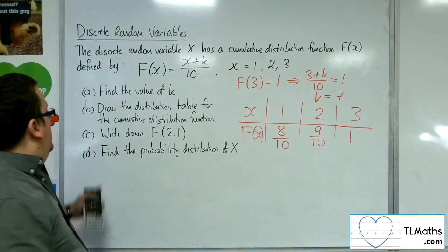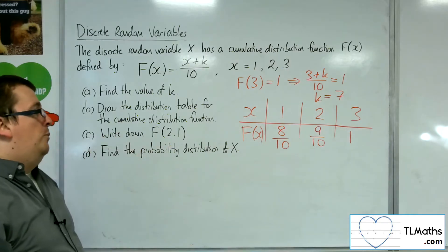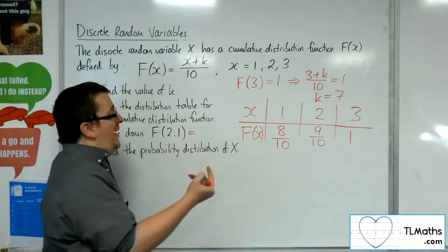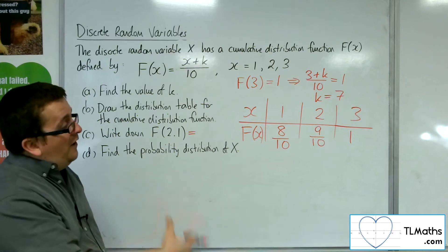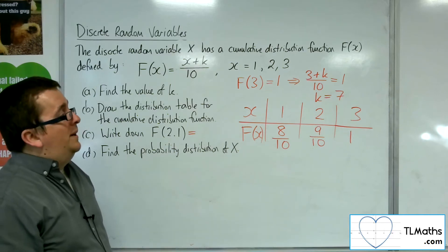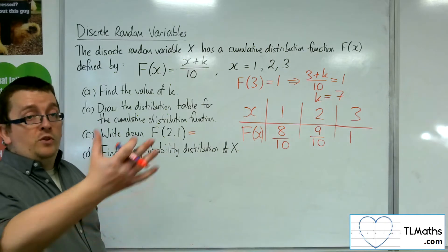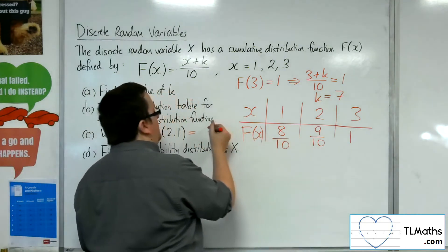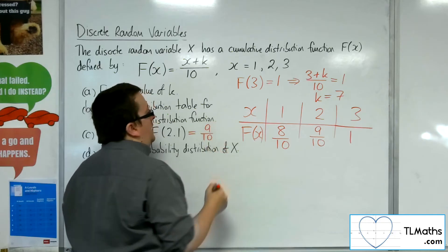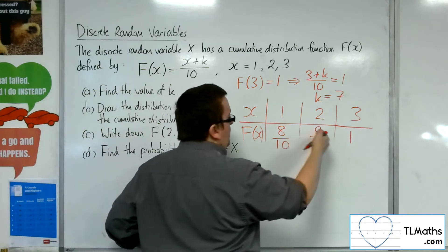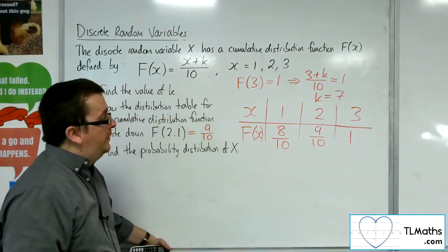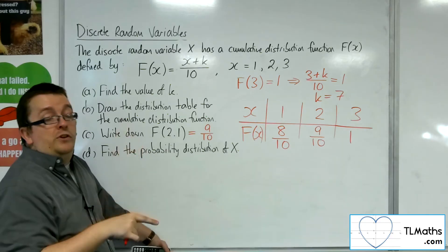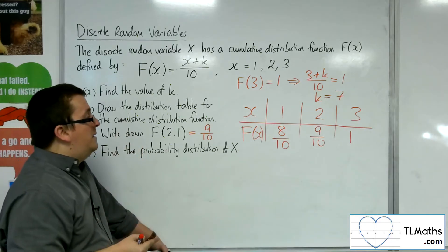So then if I want to write down f of 2.1, that is the same as the probability of x being less than or equal to 2.1. Now x can't take on 2.1, but it could take on 1 or 2, which are both less than 2.1. So that means that f of 2.1 is just 9 tenths. If these were individual probabilities for each of these, then it would be that one plus that one, but clearly that can't be the case. Remember, f of 2.1 here is the same as f of 2. You get precisely the same value.